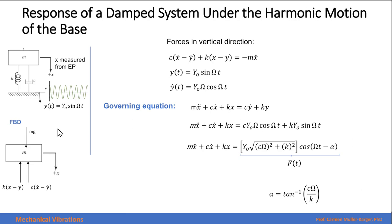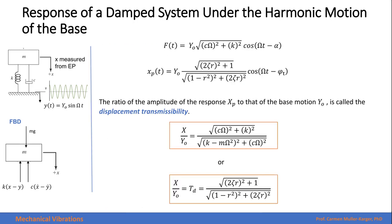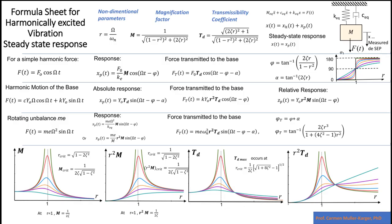The first thing we do is the free body diagram, then we add forces in the vertical direction, and we get the equation of motion. This is our external force, and then we get the response for that harmonic force. We are able to write the response either in terms of the parameters C, K, and M, or in terms of the damping ratio and the frequency ratio. Here we have the formula sheet.